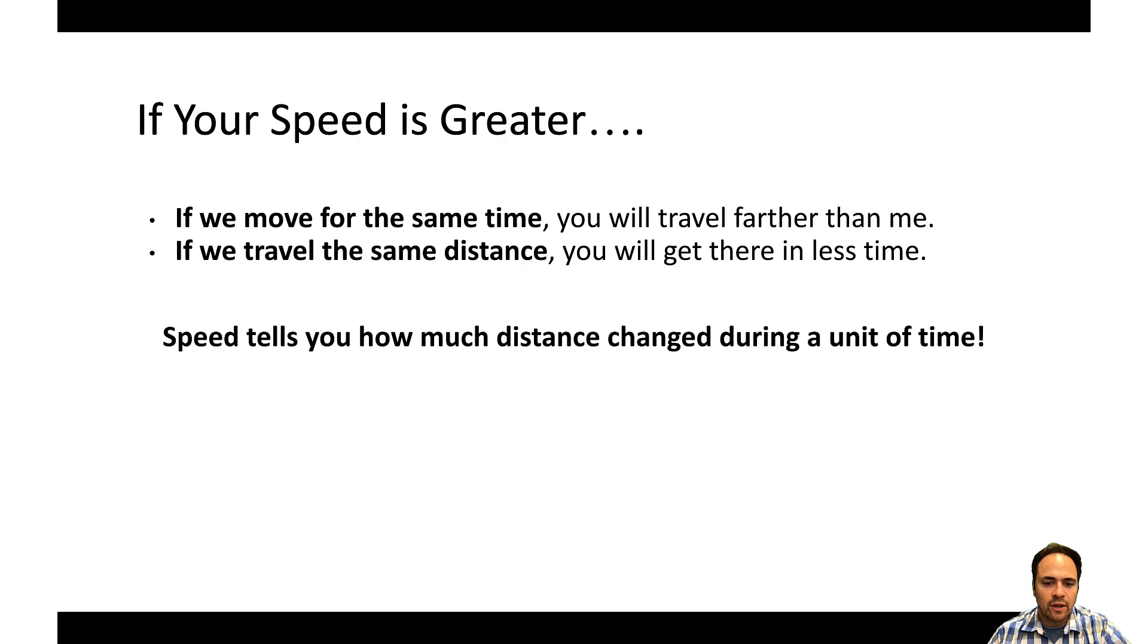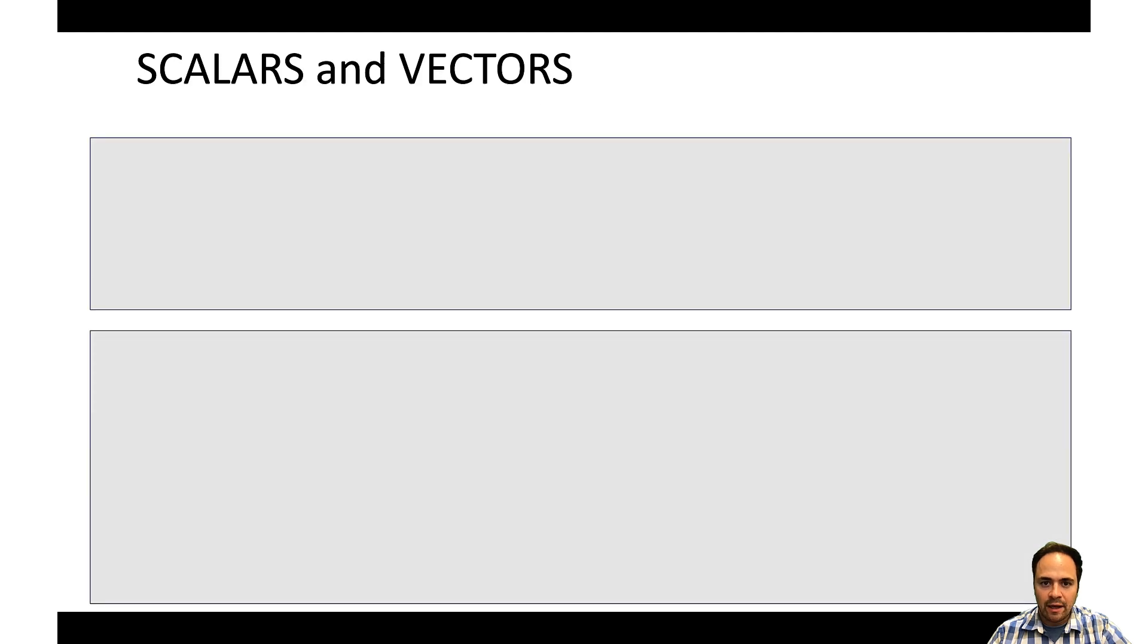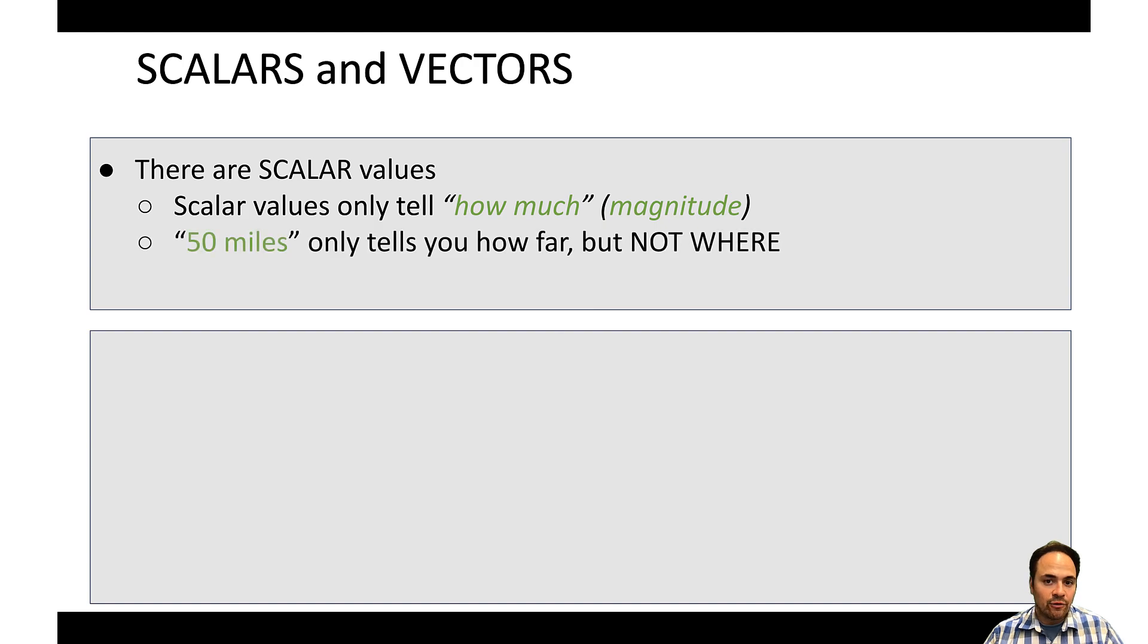So speed will tell you how much distance changed or how much distance was traveled for every unit of time. But we don't know where, we don't have a direction. And that's where different types of values come into play. Speed is an example of a scalar value, and scalar values give us just one piece of information - they give you a magnitude or how much. 50 miles only tells us how far, it doesn't tell us where. So distance and speed are both examples of scalar values.